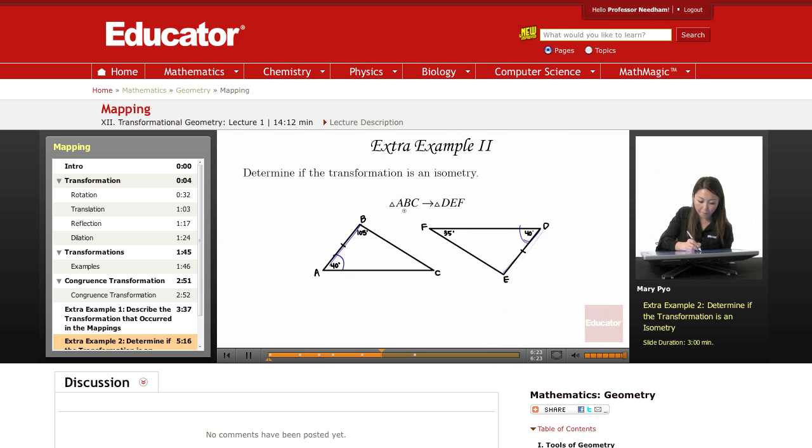Now for this one, angle B is corresponding with angle E. This one's given and this one is not. And angle C is corresponding with angle F, but this one is not given and this one is. So I want to find the measure of this angle.